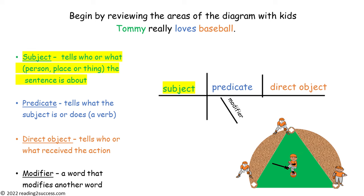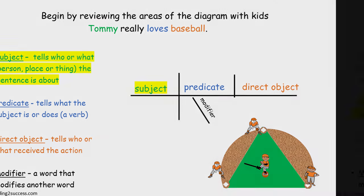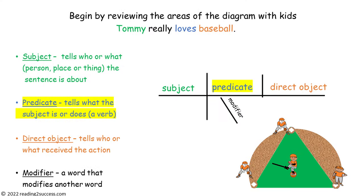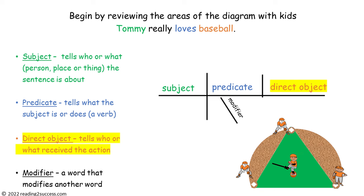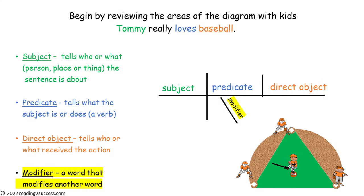Begin by reviewing what a subject is with kids. A subject tells who or what — person, place, or thing — the sentence is about. Next, review what a predicate is; it tells what the subject is or does — it is a verb. Then the direct object tells who or what received the action. This sentence also has a modifier, a word that modifies another word — it modifies the predicate.